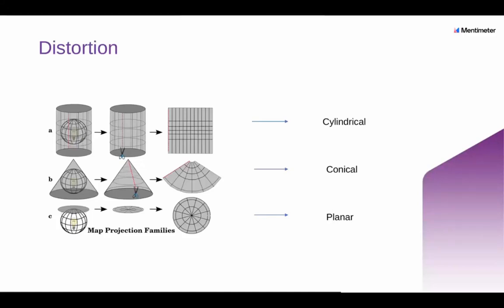There are three main projection families: cylindrical, conical, and planar. Within each of these families there are literally hundreds to thousands of different types of projection methods, which can become very confusing, but it's not completely necessary to know them all. What I would like to draw is an example of how some maps can be distorted because of different types of projection methods.